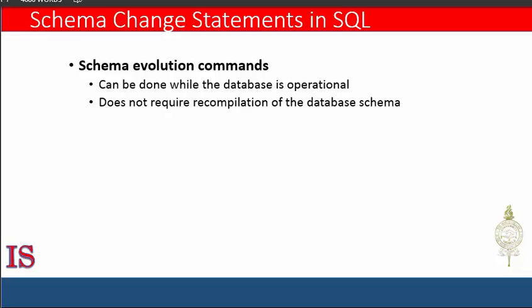Schema evolution commands are available in SQL, which can be used to alter a schema by adding or dropping tables, attributes, constraints, and other schema elements. This can be done while the database is operational and does not require recompilation of the database schema. Certain checks must be done by the database management system to ensure that the changes do not affect the rest of the database and make it inconsistent.